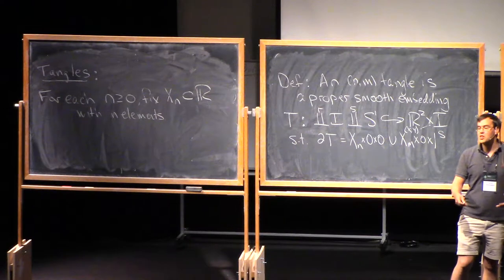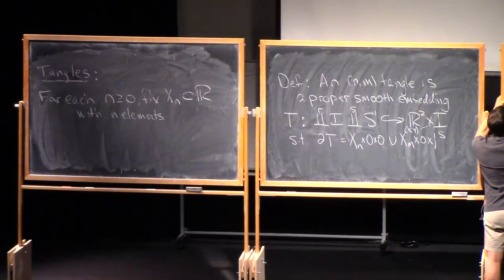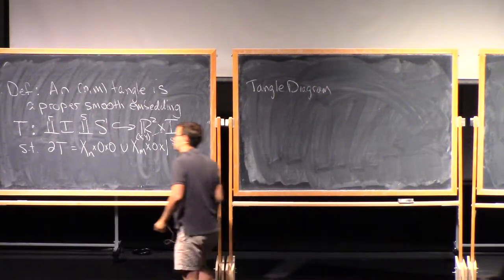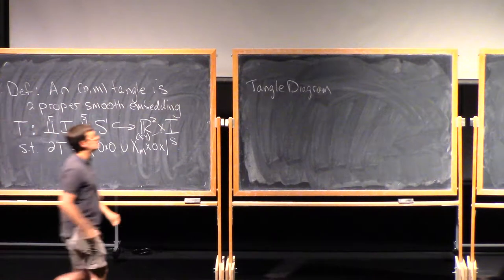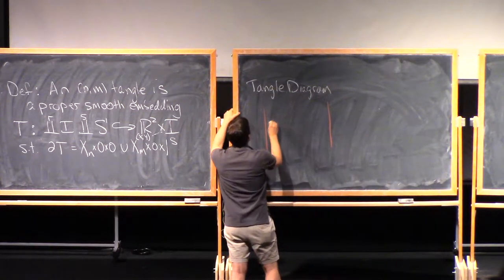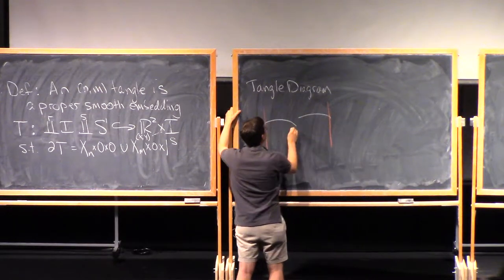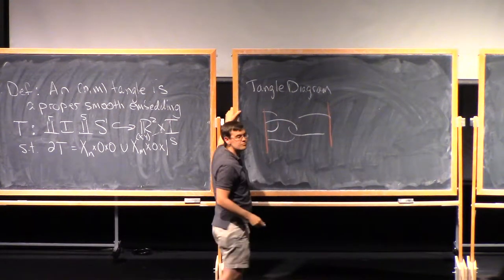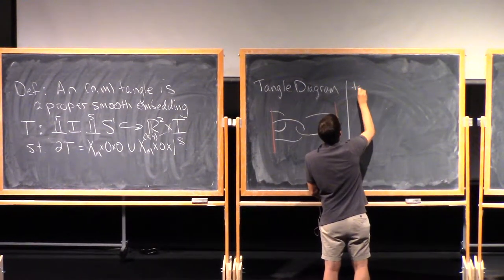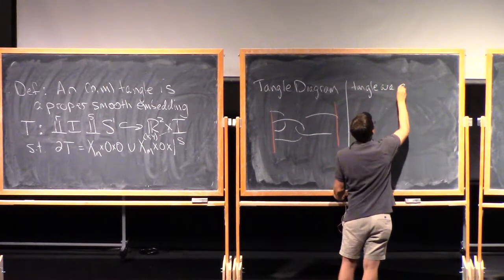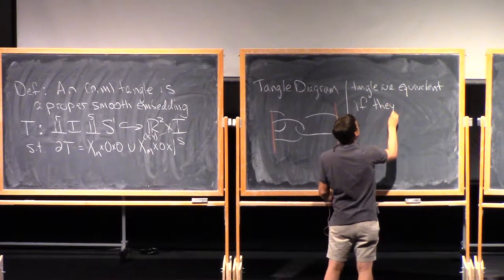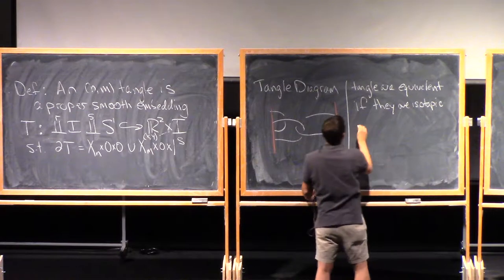So if I have a tangle, I can represent it by a diagram that I project onto the xy plane. So here's a tangle diagram. This is a diagram of a 4,2 tangle — I'm going to draw the edges of this strip, and then the tangle diagram is something like this. So that's a 4,2 tangle.